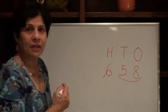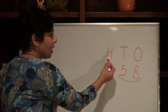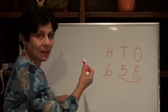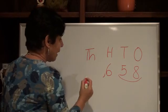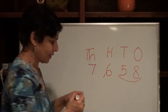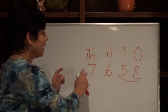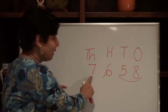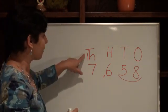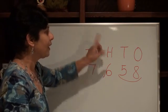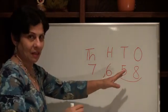Now if I was to increase the numbers, what's the next one? Ones, tens, hundreds — and our next place value is thousands. Let's say I add the number seven. How are we going to read this? We read the number here and then tell what's the place value. So seven thousand, six hundred, fifty-eight.